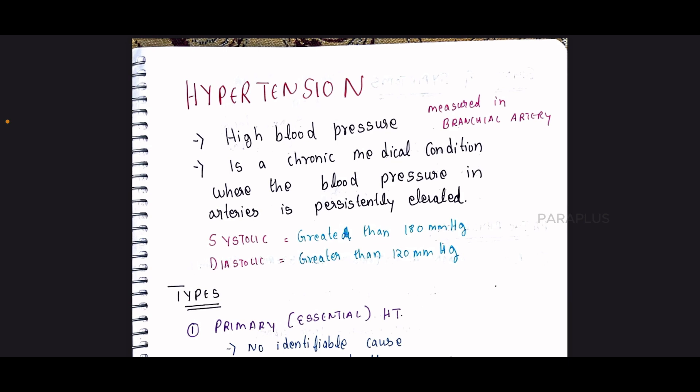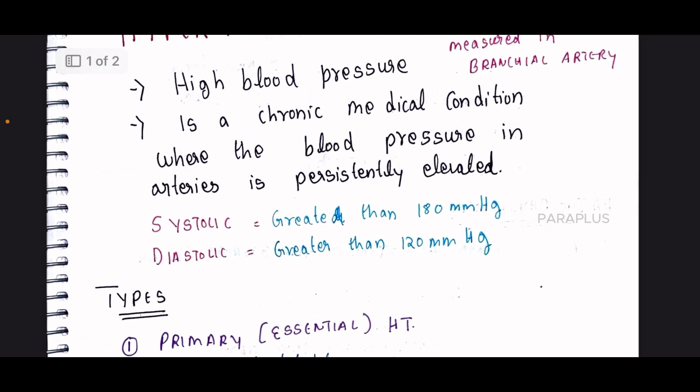So how is this pressure measured? It is measured as systolic and diastolic. Systolic is greater than 180 — if you have that level, you will be told you have hypertension. Diastolic is more than 120 — then you will be told you have hypertension.